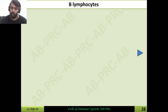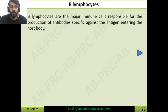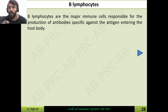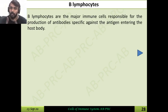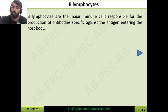B lymphocytes are very important for any kind of immune response. B lymphocytes are the major immune cells responsible for the production of antibodies. As seen previously, plasma cells are differentiated from B cells and are responsible for antibody production. In general, B cells are the antibody-producing cells; more specifically, plasma cells are the antibody-producing cells, and they are developed from B cells. These antibodies are very specific molecules that react against foreign substances.